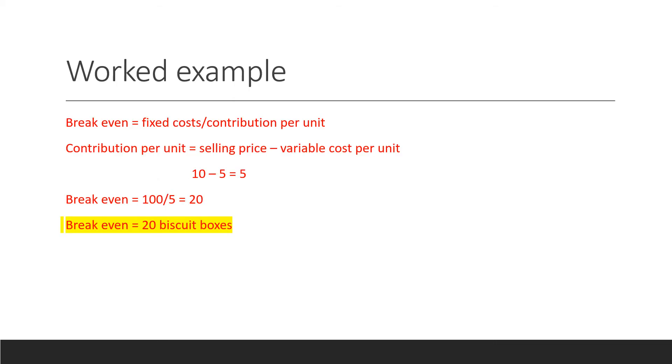So we now need to work out her break even. So what we do is you do fixed cost divided by the contribution per unit. To work out the contribution per unit, you do the selling price minus the variable cost per unit. And as we can see, her selling price is £10 and her variable cost per unit is £5. So we minus the both and we get £5.